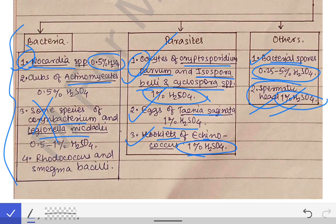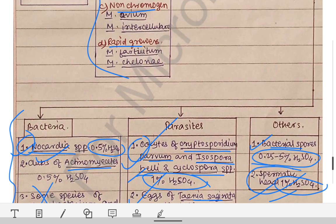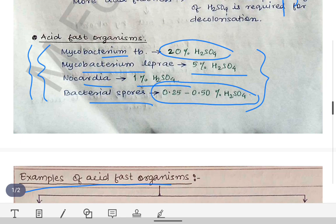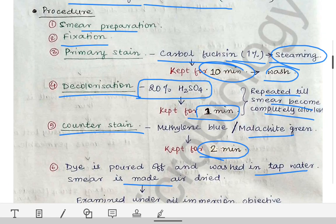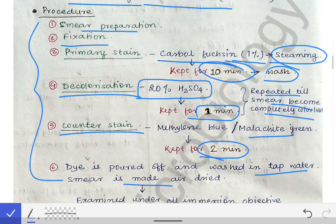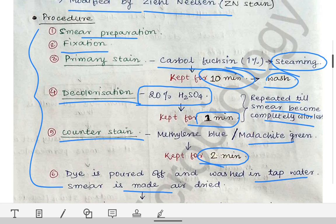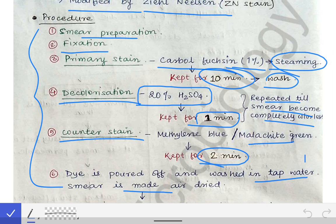To summarize the key acid-fast organisms to remember: Nocardia, oocysts of Cryptosporidium parvum, Isospora belli, and Cyclospora species, eggs of Taenia saginata, hooklets of Echinococcus, bacterial spores, spermatic head, and all species of genus Mycobacteria. The ZN staining procedure itself should be at your fingertips, as it is asked in vivas and increasingly in theory university exams.